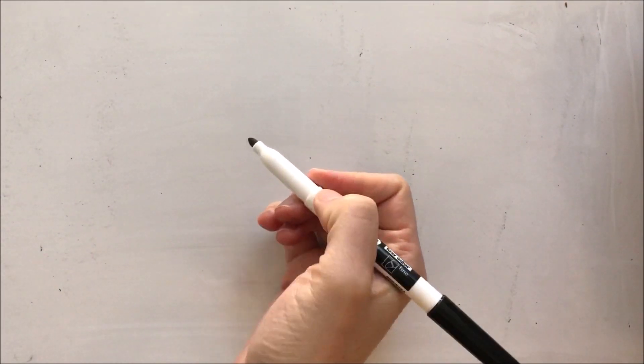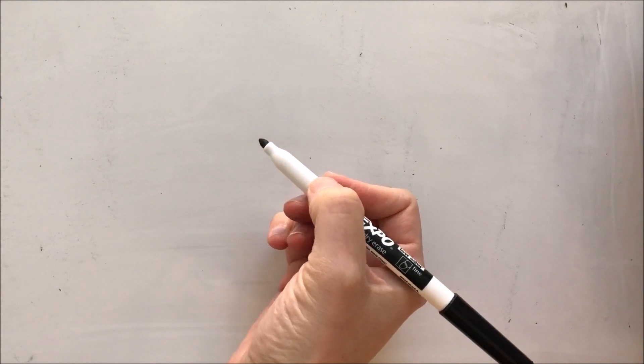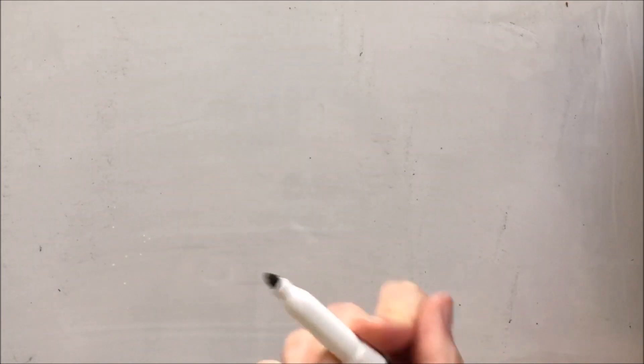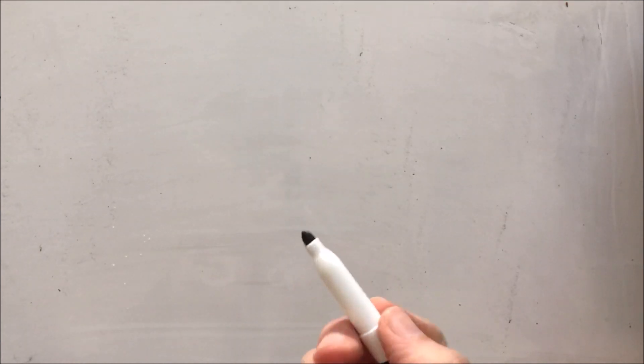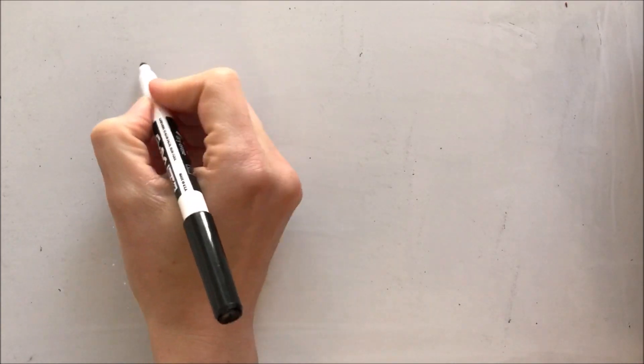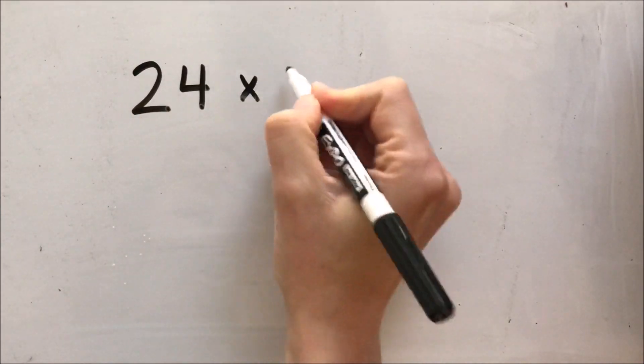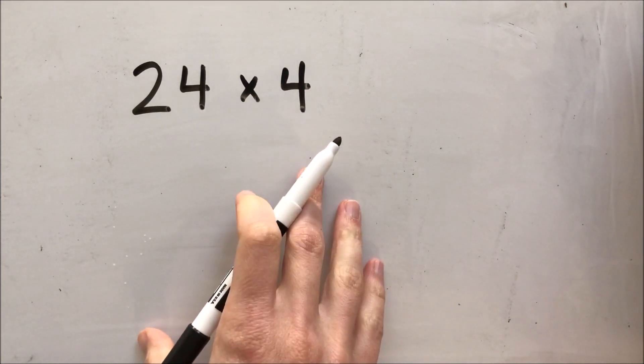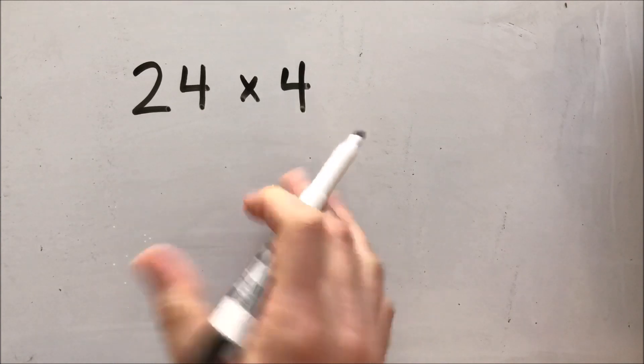I'm going to solve three different problems using those different strategies. As I'm solving these problems, I'm going to show you a problem and I'd like you to pause the video, try to solve the problem on a piece of notebook paper or a whiteboard, and then see if you get the same products that I do. It doesn't matter if I use the box method or the traditional method — you use whatever method you want to, and we'll just compare products at the end. Let's start with the problem 24 times 4.